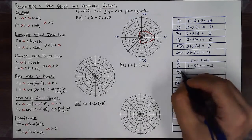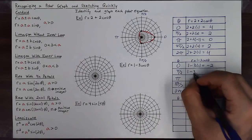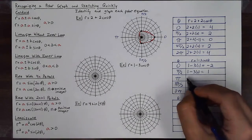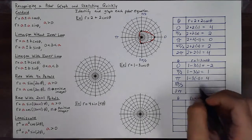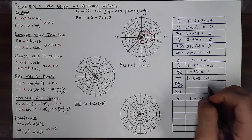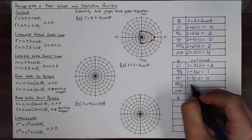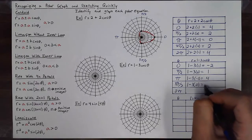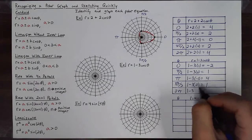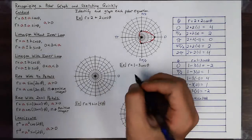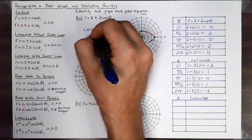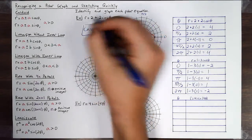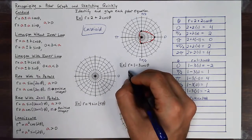At π/2: 1 − 3·cos(π/2) = 1 − 0 = 1. At π: 1 − 3·cos(π) = 1 − 3·(−1) = 4. At 3π/2: 1 − 3·cos(3π/2) = 1 − 0 = 1. At 2π: 1 − 3·cos(2π) = 1 − 3 = −2. So this was a cardioid in the previous example, and this one is a Limaçon with an inner loop.